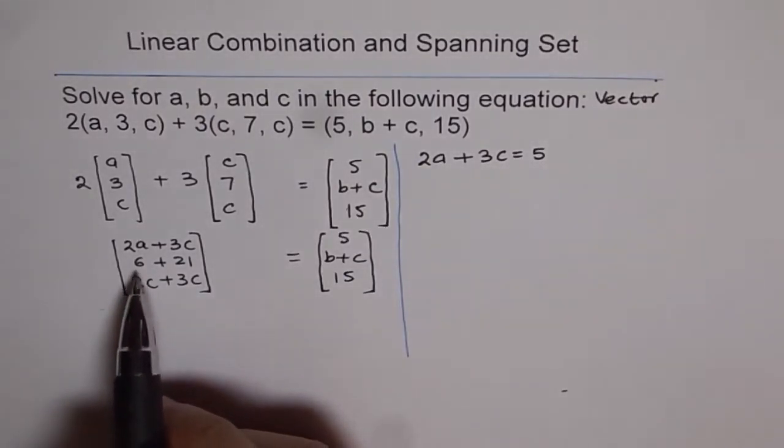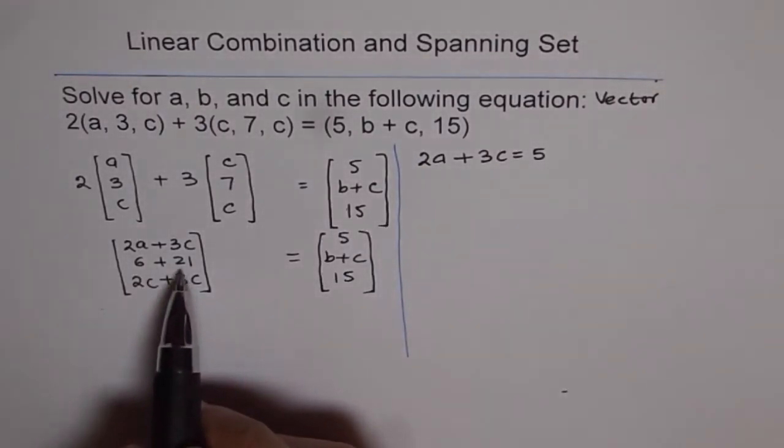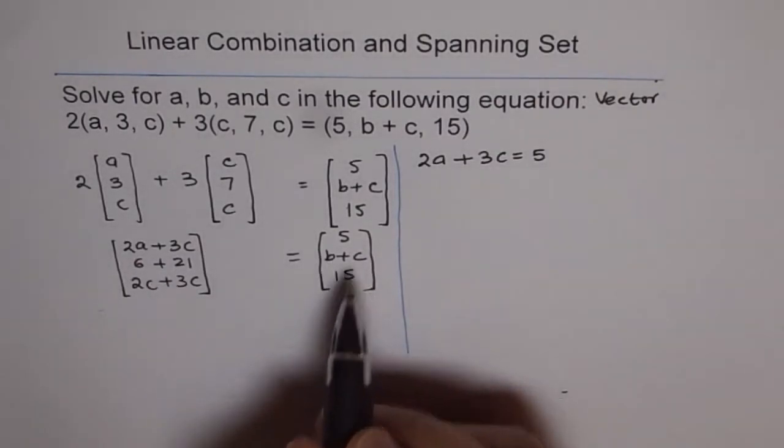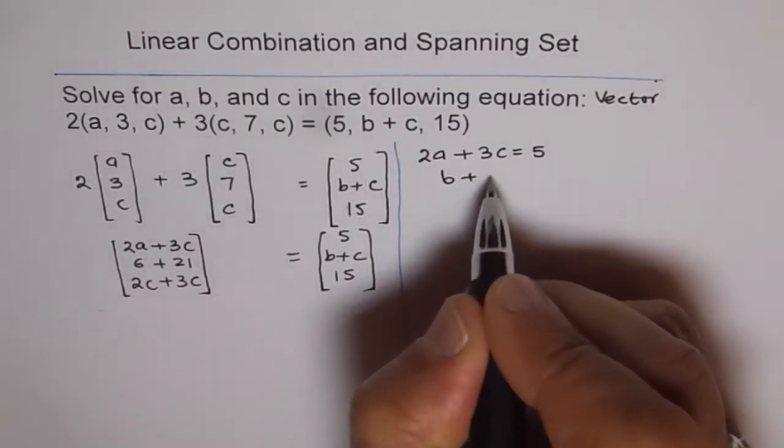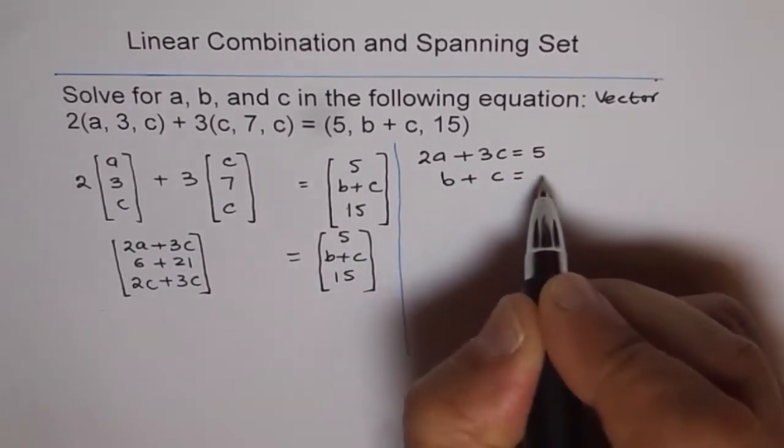And the second equation is 6 plus 21, which is 27, equals to b plus c. Let me write variables on this side. We get b plus c equals to 27.